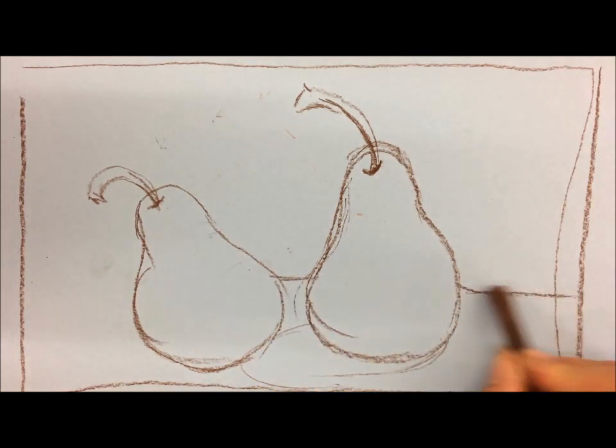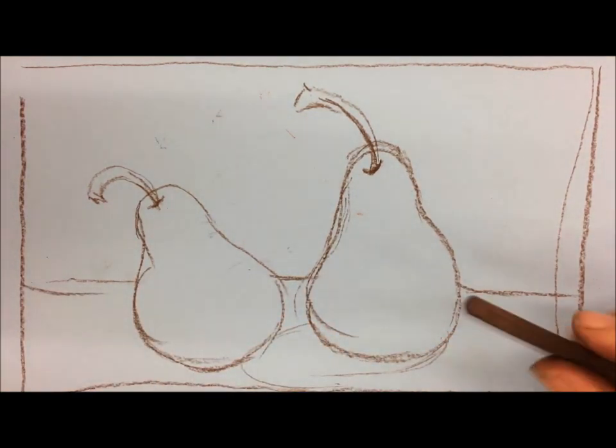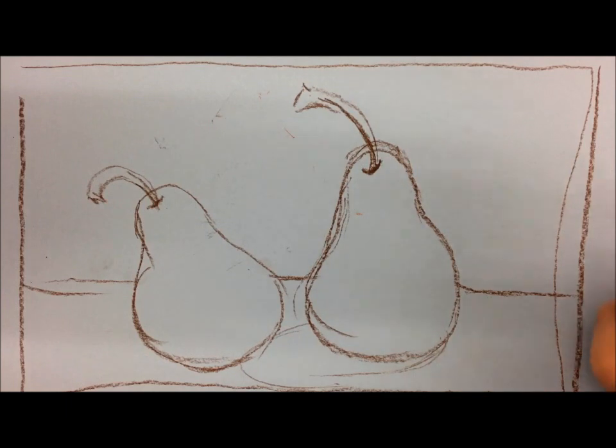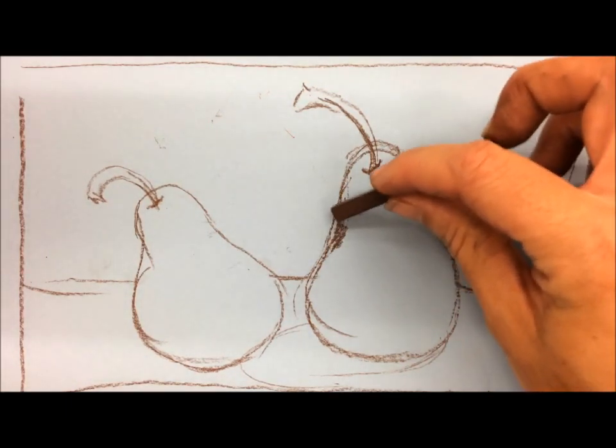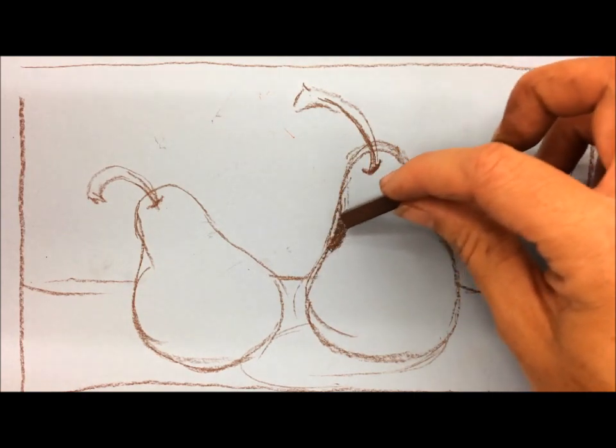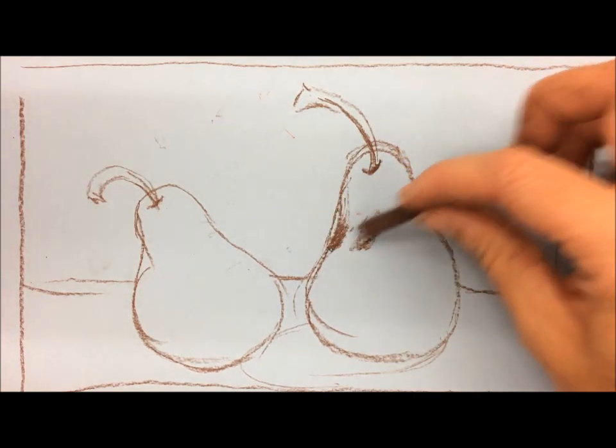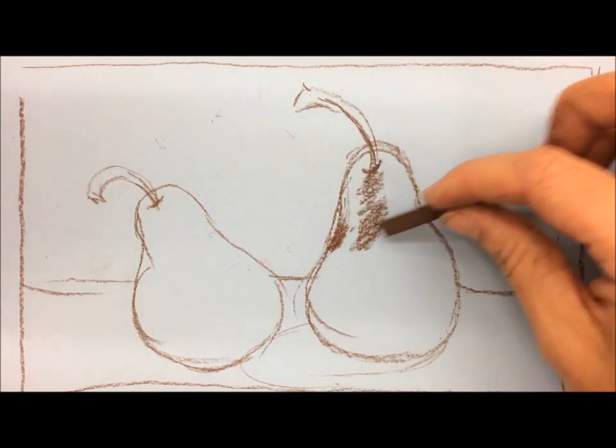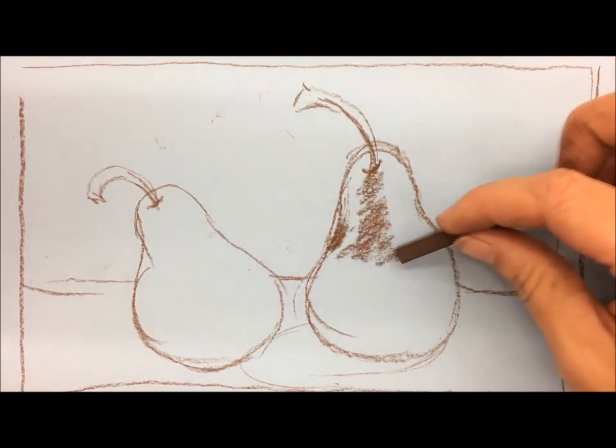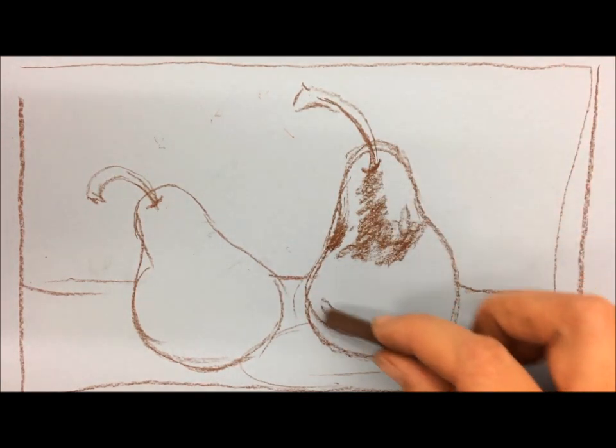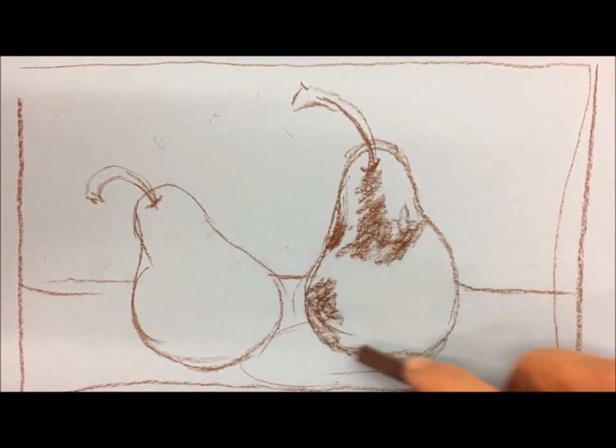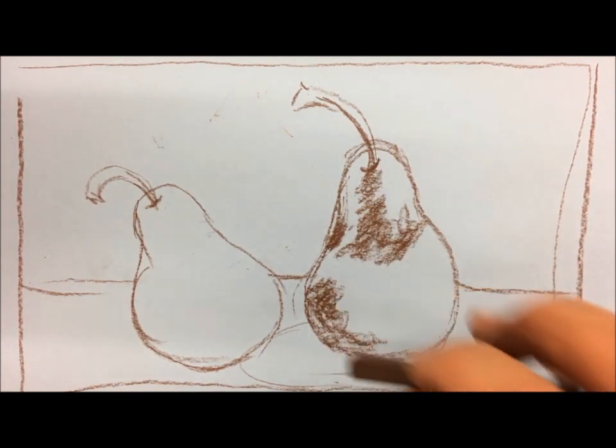Conté crayon works a lot like chalk pastel, but to me it feels a little bit more like a mixture between a charcoal pencil and an ebony pencil, because they are fairly smooth but then they also have that characteristic charcoal smudging nature.